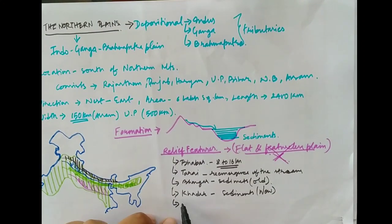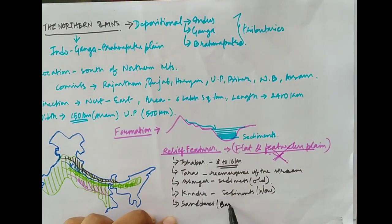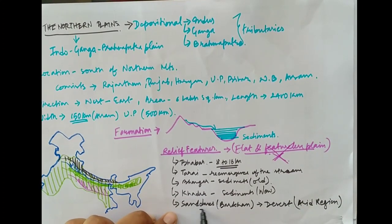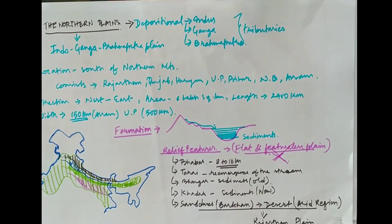Another northern plain feature is the sand dunes, also known as Barkhan. They are crescent-shaped and basically found in desert or semi-arid areas, formed by the depositional work of wind. Basically, it is formed over the Rajasthan plains.